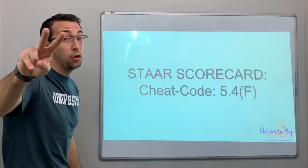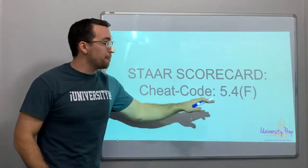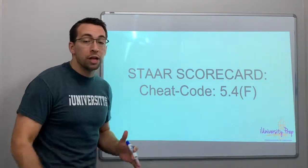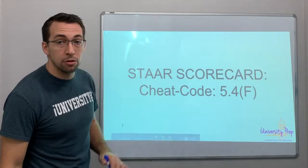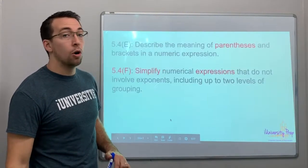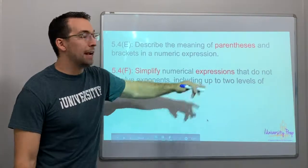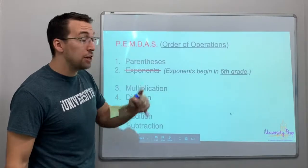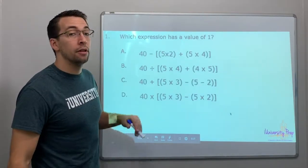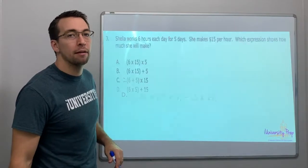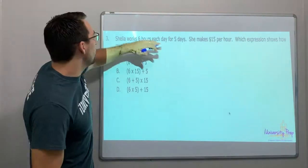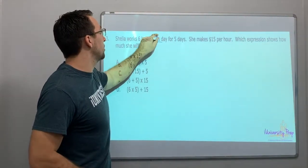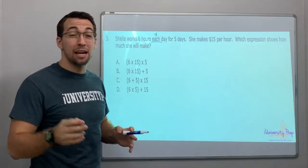What up — video number two for Star Scorecard Cheat Code 5.4F. We're in algebra, straight algebra, talking about multi-step problems. This is video two, so no need to go over the vocab, but we're simplifying expressions and solving these math expressions. Watch video one if you want to go over the concepts and the vocab again.